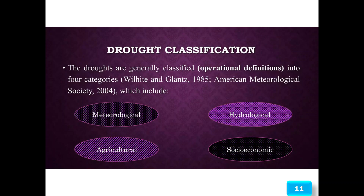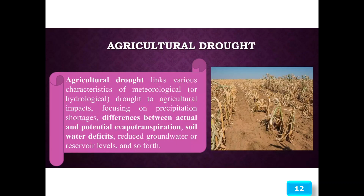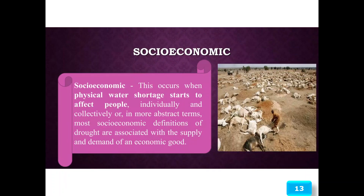Droughts are generally classified into four categories under operational definitions — Wilhite and Glantz (1985) and the American Meteorological Society (2004) — which include: meteorological, hydrological, agricultural, and socioeconomic. Agricultural drought links various characteristics of meteorological or hydrological drought to agricultural impacts, focusing on precipitation shortage, differences between actual and potential evapotranspiration, soil water deficit, and reduced groundwater or reservoir levels. The right-side picture shows how society is affected by drought.